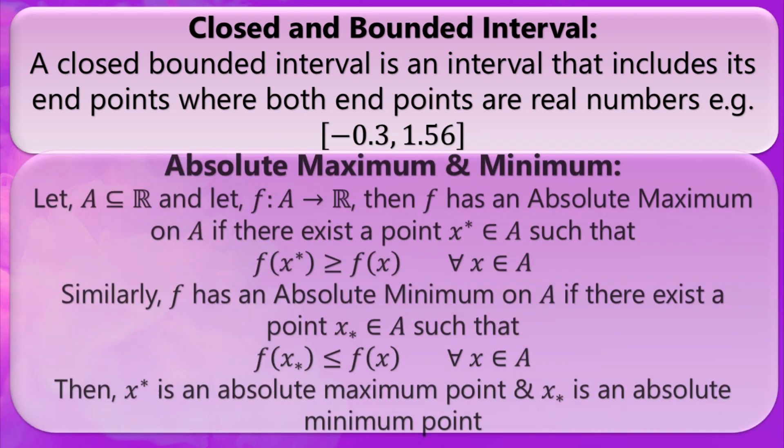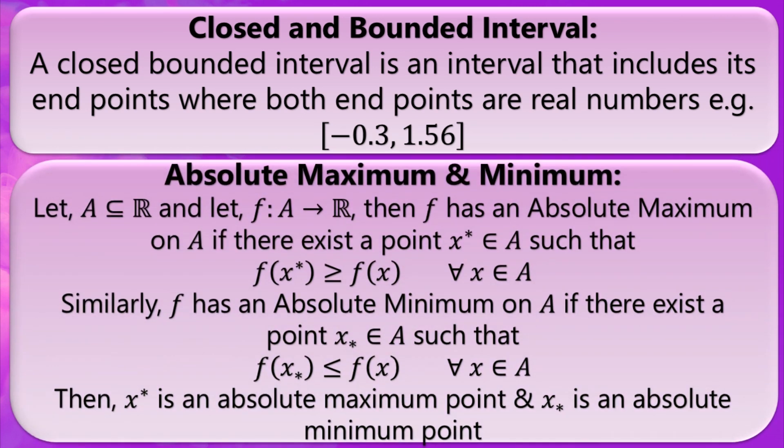The second one is absolute maximum and absolute minimum. Let A be a subset of real numbers and let F be a function defined from A to the set of real numbers. Then F has an absolute maximum on A if there exists a point x* such that the image of x* is greater than or equal to the images of all the other points of A.